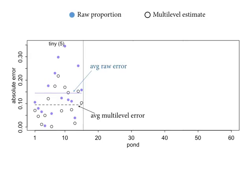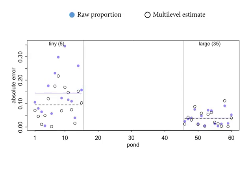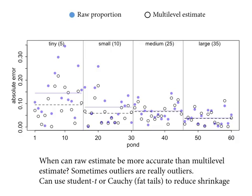At larger tanks you get almost nothing — there is a slight improvement from pooling, but almost nothing because when you have 35 tadpoles you already get a really good estimate. When you've got a lot of data per cluster, varying effects models don't do a lot for you unless you also care about the population itself, so you can extrapolate to new clusters. The benefits diminish as the amount of data goes up, but there's information flowing from the right-hand side of the graph to the left-hand side to improve the estimates on the small clusters.